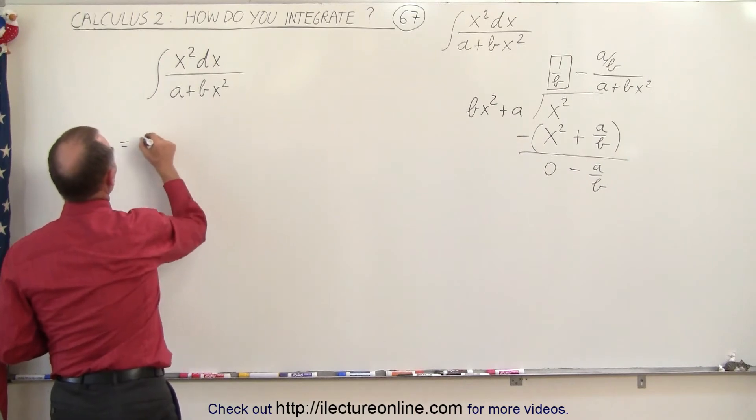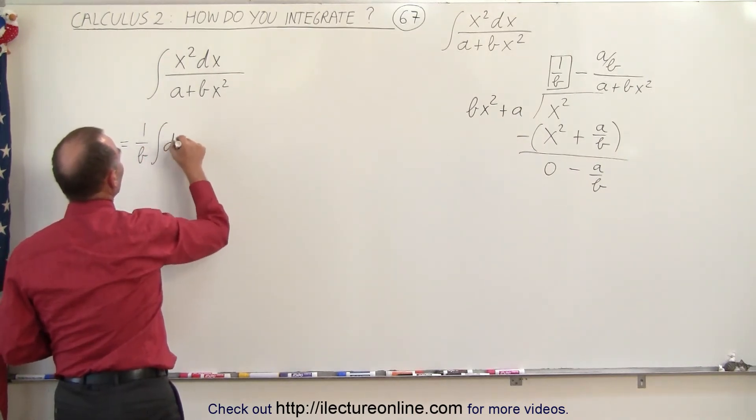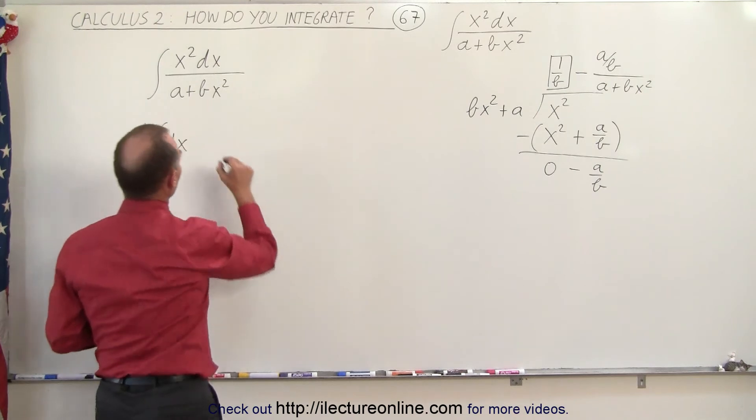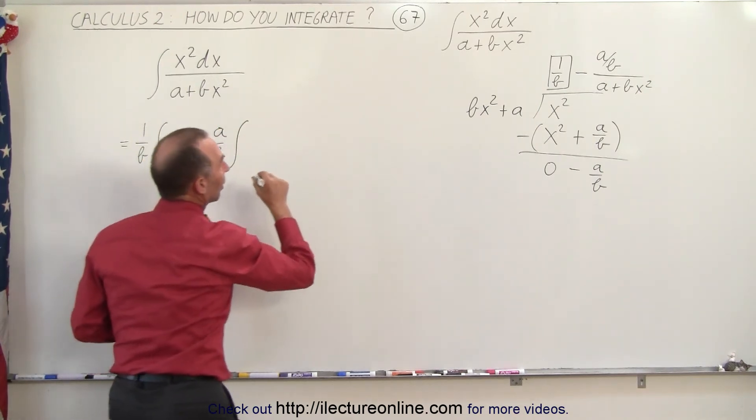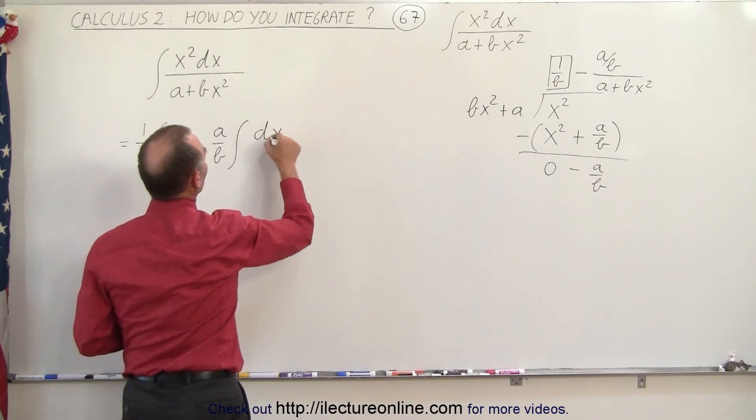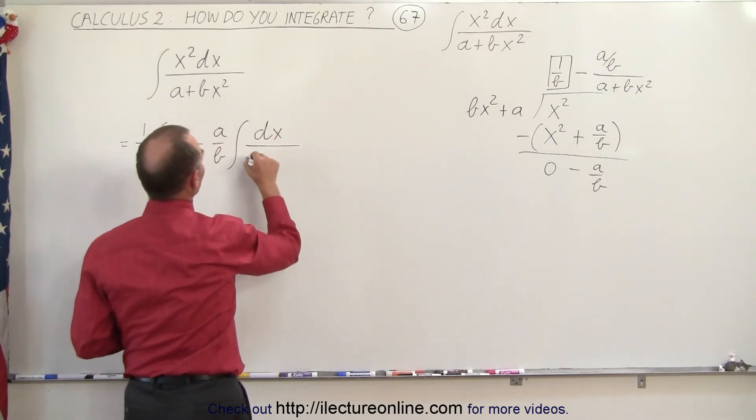So this becomes equal to 1 over b times the integral of dx and then minus a over b times the integral of dx divided by a plus bx squared.